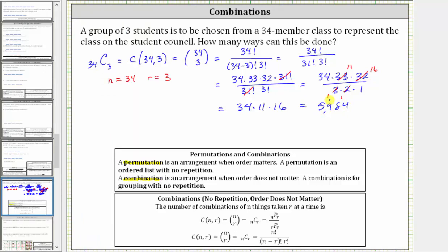So now we know there are 5,984 ways to select groups of 3 from a 34-member class.